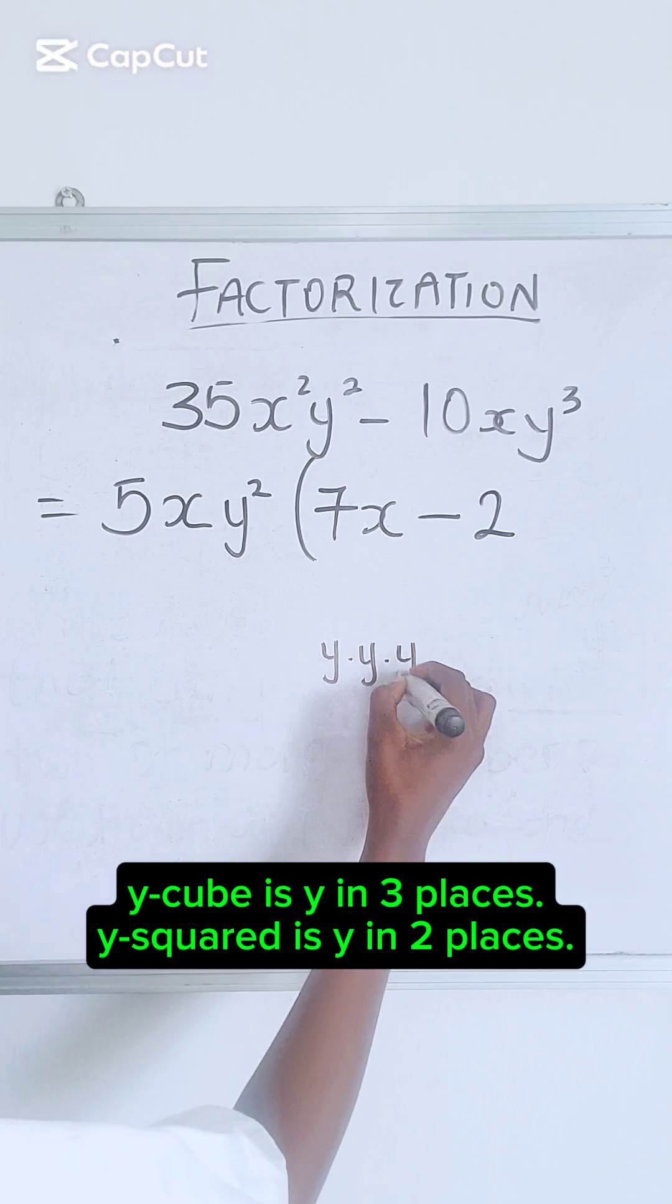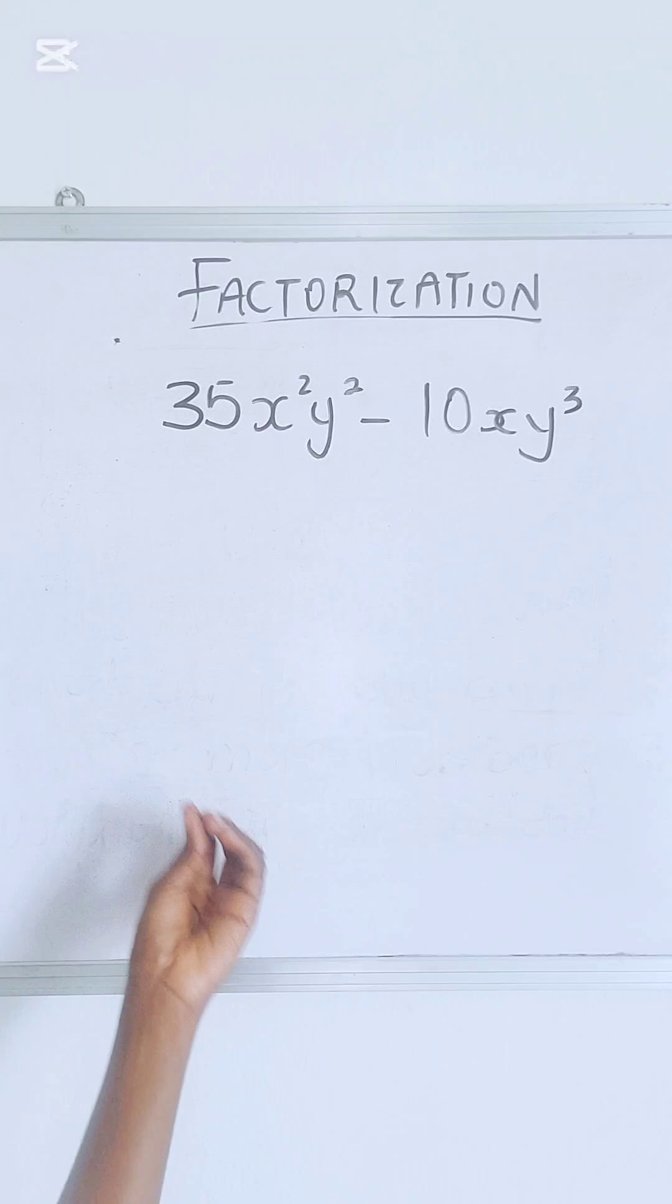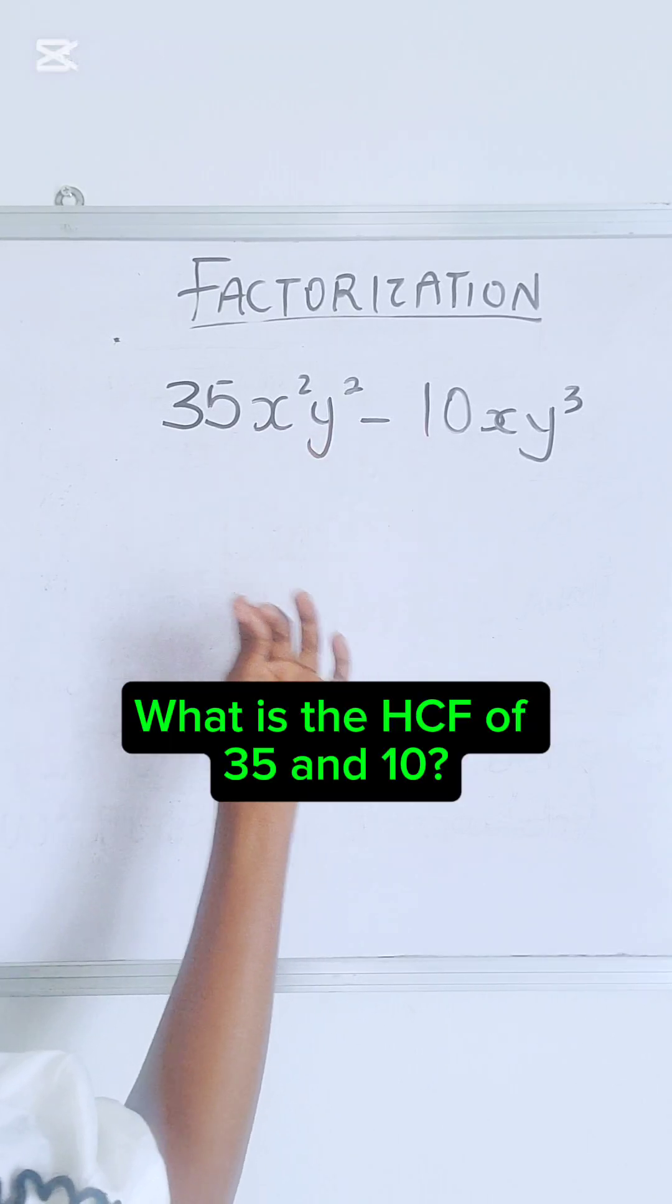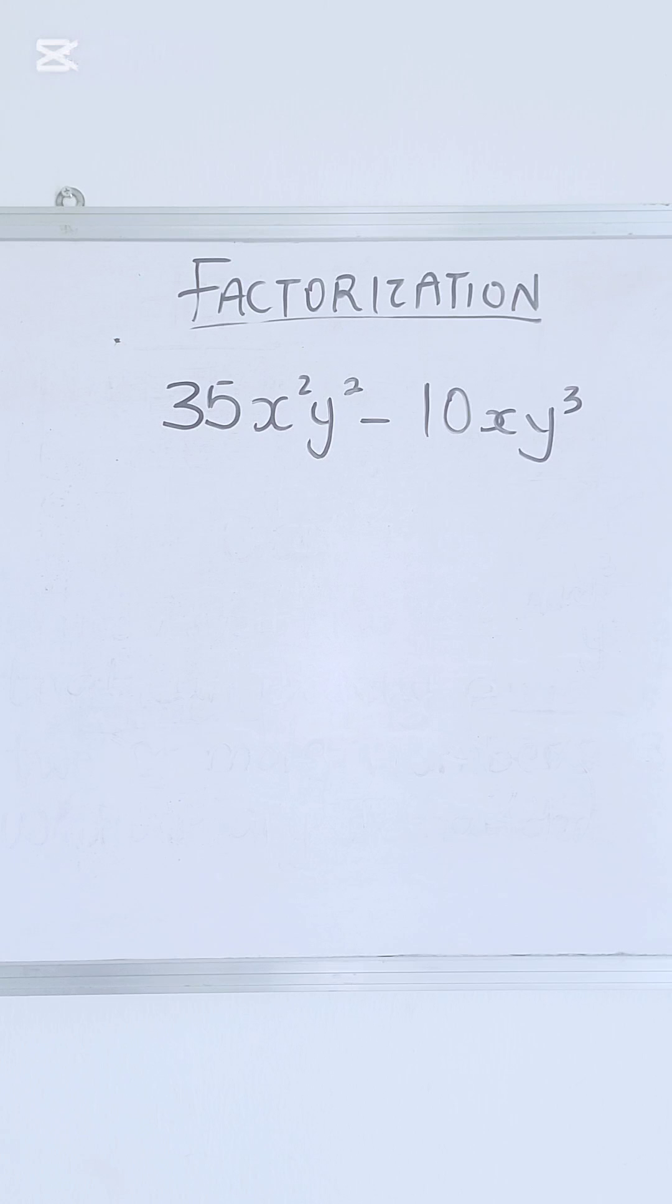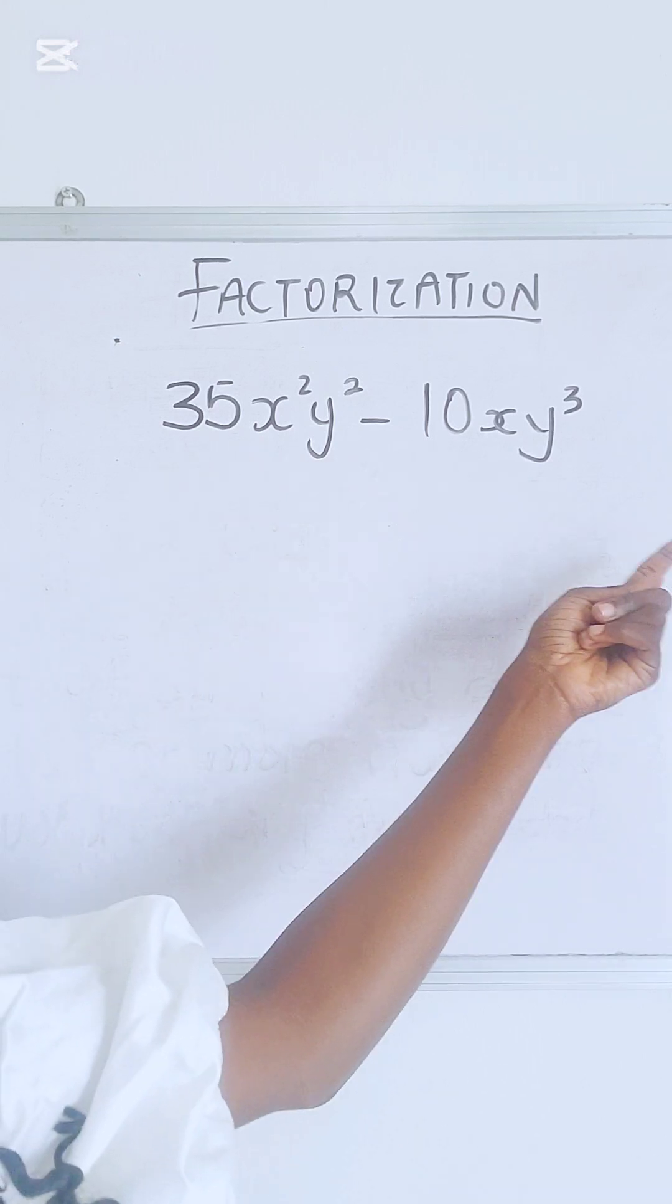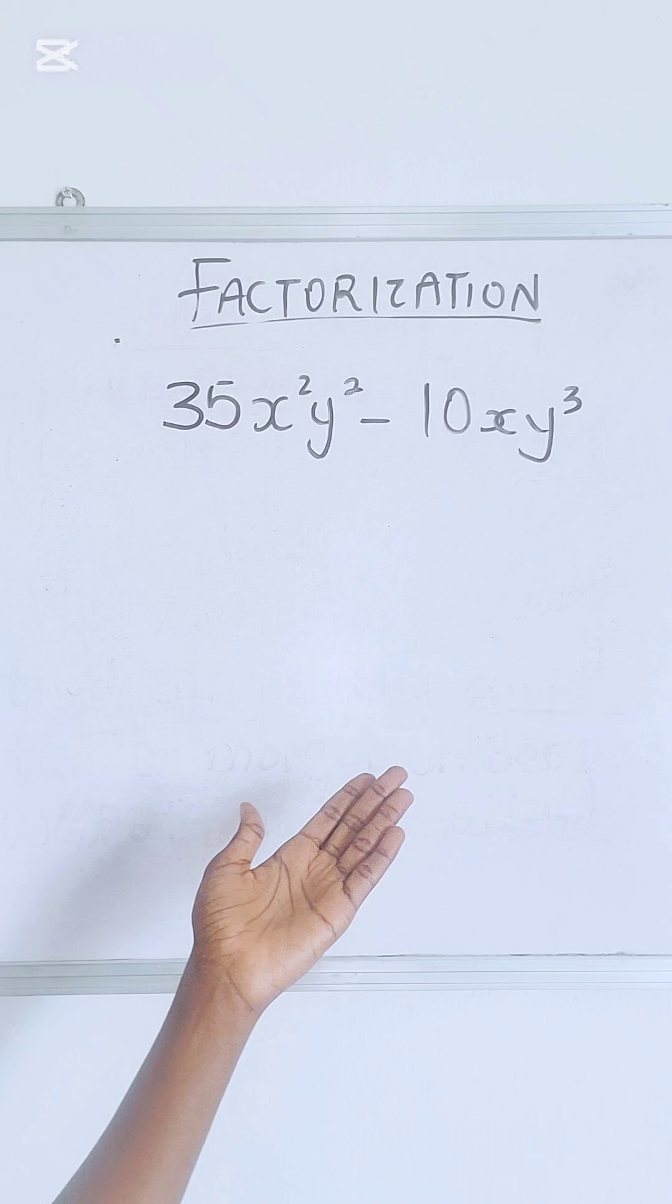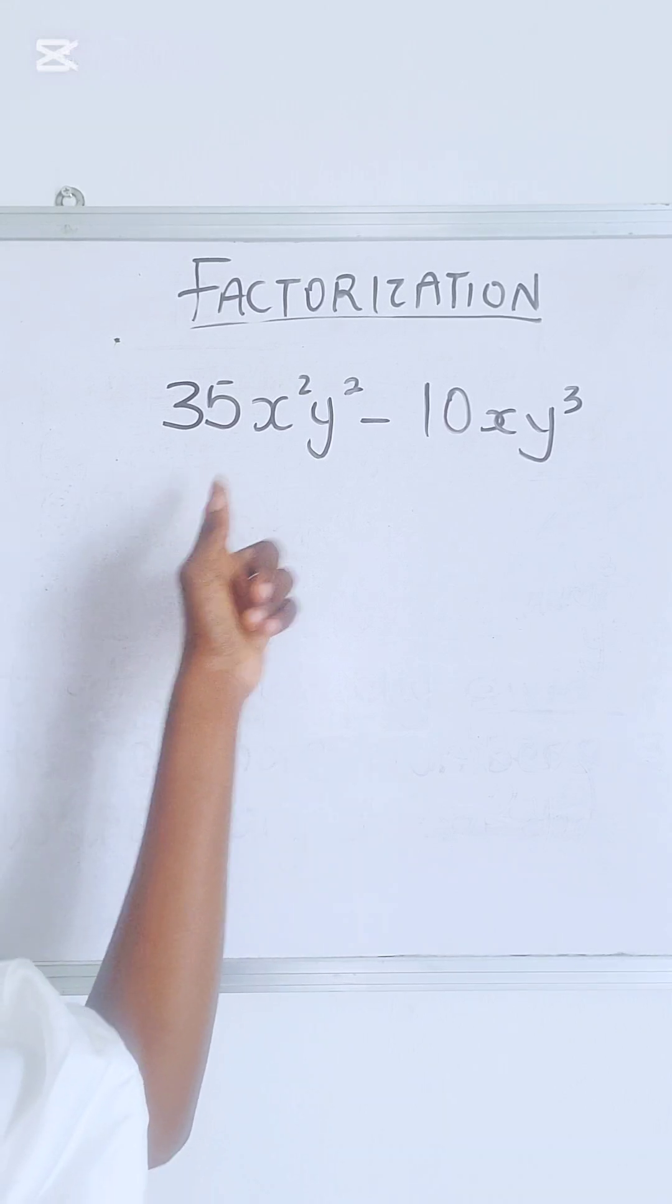Y cube is y in three places, y square is y in two places. You have to know the factors of 35 and 10, the highest common factors. After you know that, you're going to check the letters and see which is common. Put it outside and put the rest in the bracket. The highest common factor of 35 and 10 is 5.